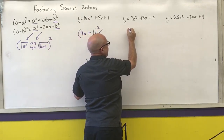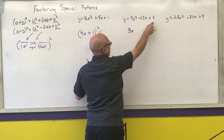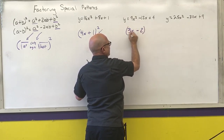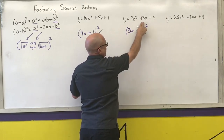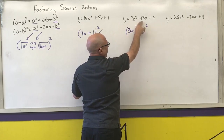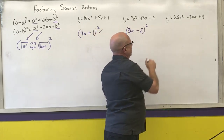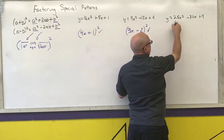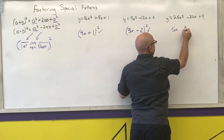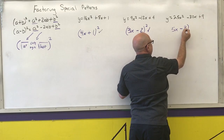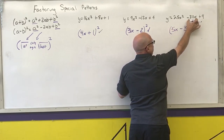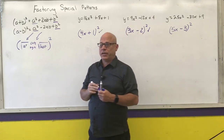Square root of the first is 3x, square root of the last is 2, copy the sign minus — all squared: (3x − 2)². Check the middle term: two times negative 2 is negative 4; negative 4 times 3x is negative 12x. That one checks. Square root of the first is 5x, square root of the last is 3, copy the negative sign — all squared: (5x − 3)². Negative 15 times 2 is, in fact, negative 30 — my middle number did check.